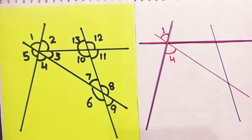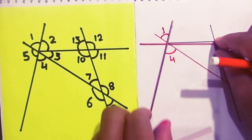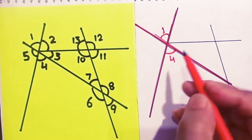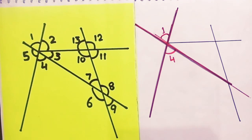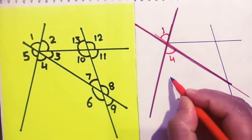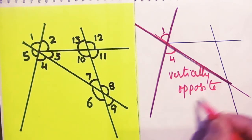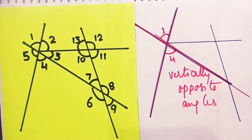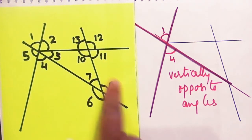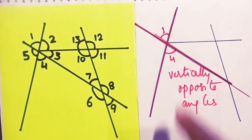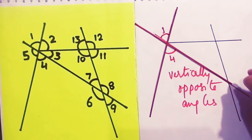Let us see about angles 1 and 4. We find that these two angles are made when two lines intersect each other. Therefore, they are vertically opposite angles. Always remember that if these two angles are being asked, you need not go around other angles — just focus on the bird's eye only. That is 1 and 4.